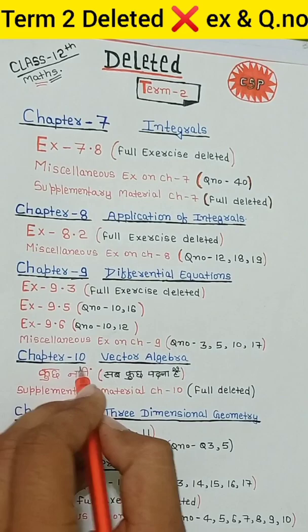Chapter 10, Vector Algebra, is not deleted. But the supplementary exercise, which is on the last page, is deleted.